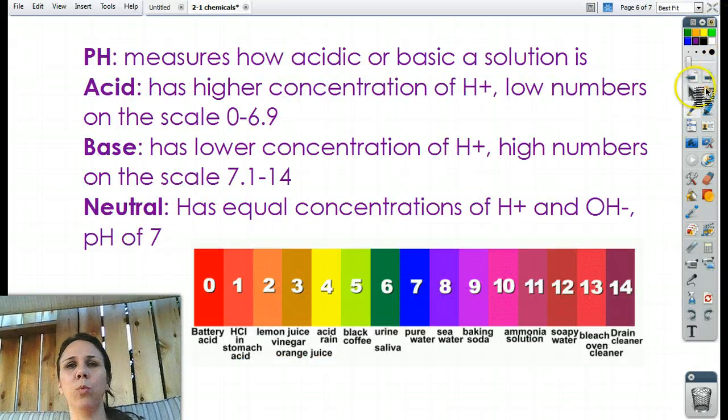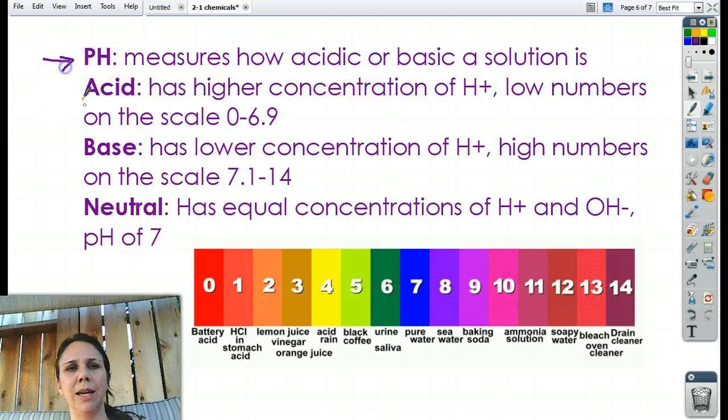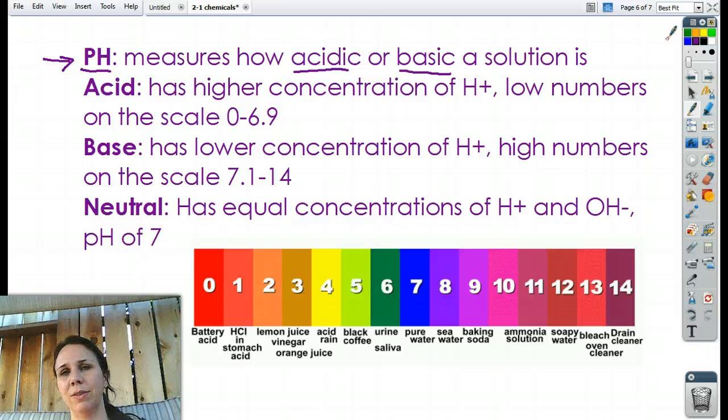Now, when we have water solutions, we usually measure their pH. pH is a measure of how acidic or how basic something is. So, what does that mean? Well, we know acids, like we know that lemons and grapefruits are very acidic, and that soaps and cleaning detergents are basic. So, what does it really, really mean?